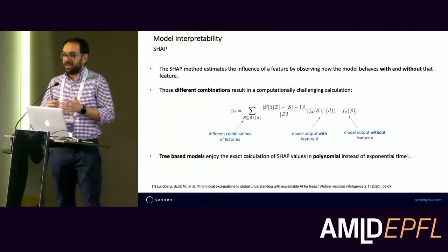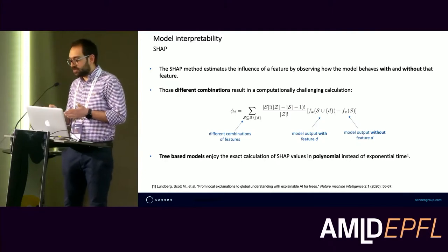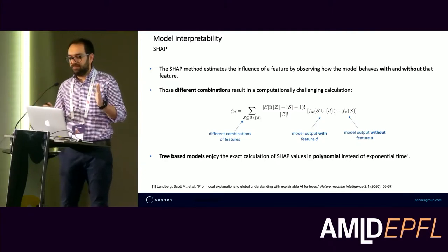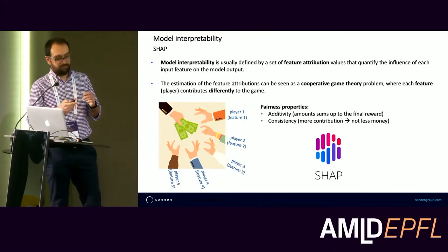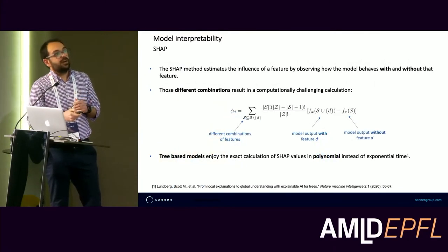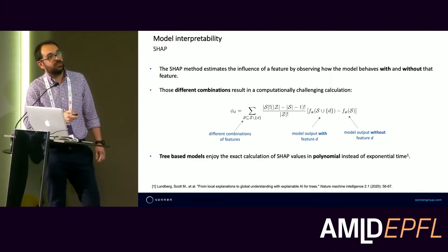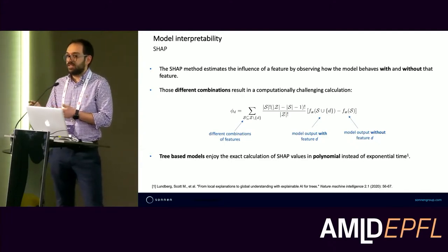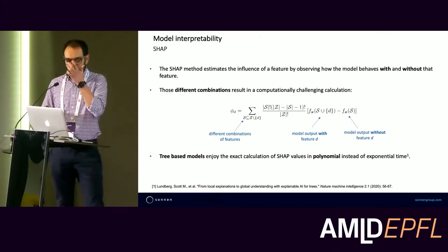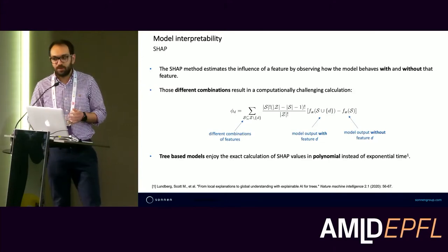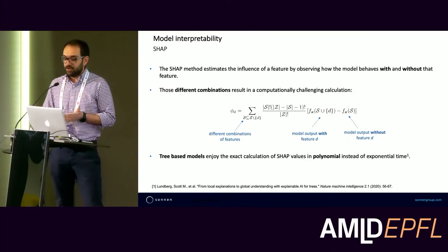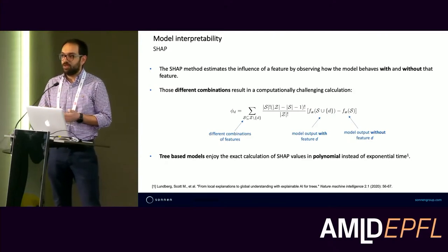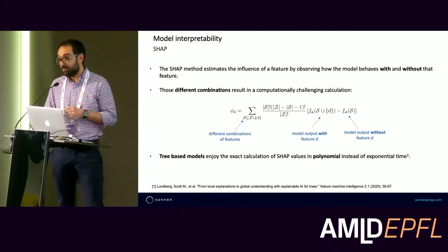To calculate those Shapley values, we observe how the model behaved with and without a specific feature, doing this for all possible feature combinations. This results in a very challenging calculation that increases exponentially with the total number of features. Fortunately, researchers at the University of Washington proposed a method that allows us to calculate the exact Shapley values in polynomial time instead of exponential time, but only for tree-based models.